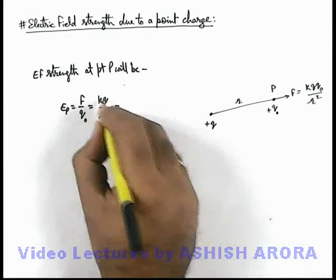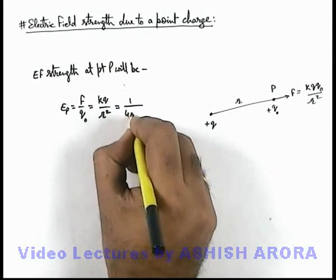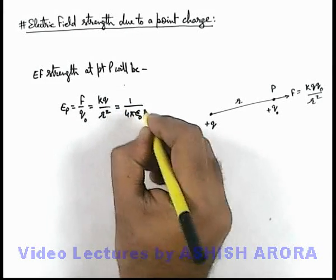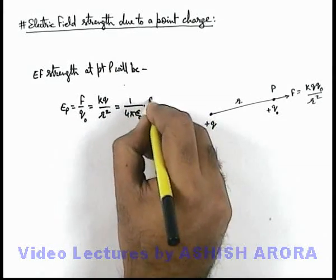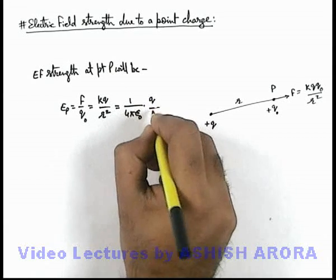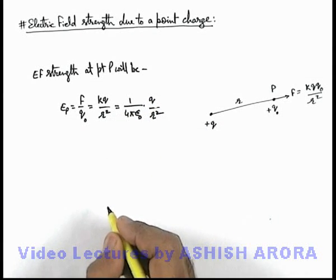In free space, we can also write k as 1/(4πε₀), as the dielectric constant of free space is unity. This is q/r². This is the way we write it.